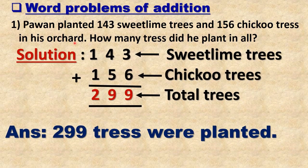Students, you have already learned the solving of addition word problems. Let us revise by solving a word problem of addition. First example: Pavan planted 143 sweet lime trees and 156 chickoo trees in his orchard. An orchard means a piece of enclosed land planted with fruit trees. How many trees did he plant in all?